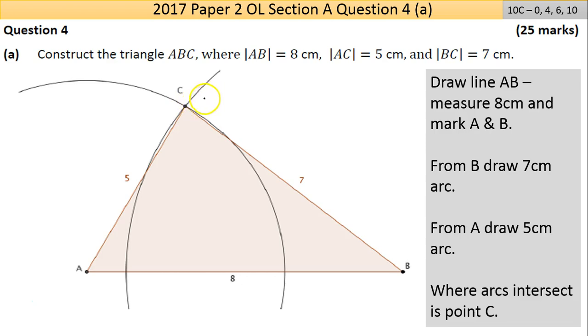Now you need to find where line AC and line BC meet. That's simply done by drawing an arc of 7 centimeters from B. Put your compass point here and measure 7 centimeters on your ruler and draw an arc. Then from point A, measure 5 centimeters and draw an arc.